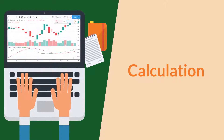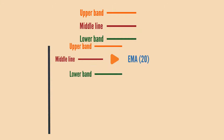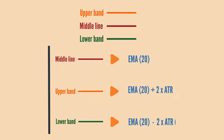Calculation. The middle line is the moving average (MA), which is usually the EMA20. The upper band and the lower band are calculated based on the same formula, in which the EMA20 is the exponential moving average within 20 periods, and ATR is the average true range indicator, typically over 10 or 20 periods.